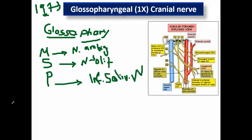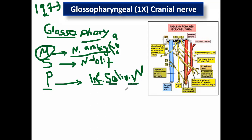Again, the important nuclei: nucleus ambiguus is seen in nerves 9, 10, and 11. Ambiguous means motor — any muscle supplied by all three cranial nerves originates from nucleus ambiguus. The parasympathetic here means the inferior salivary nucleus.